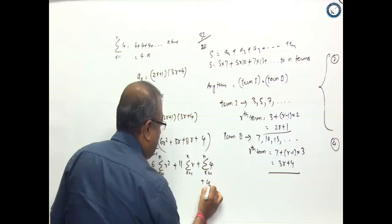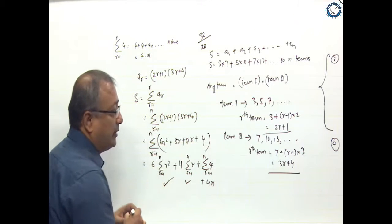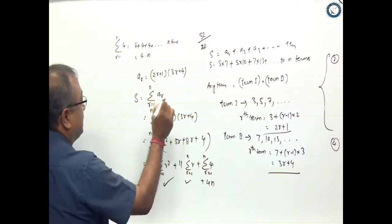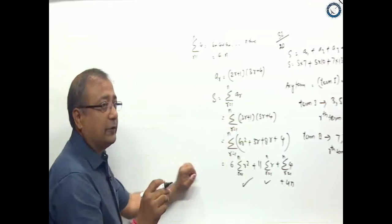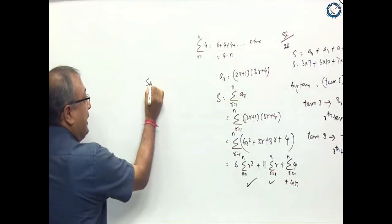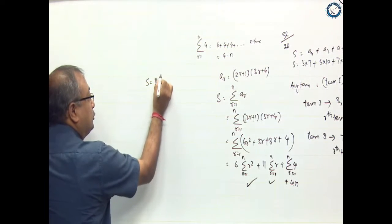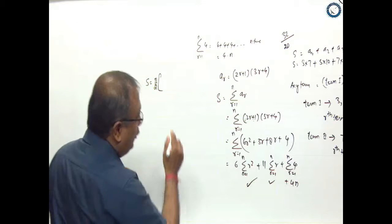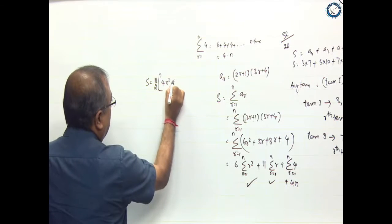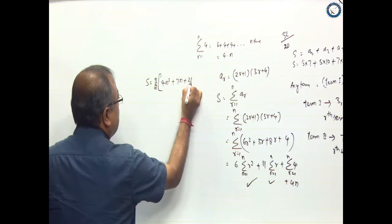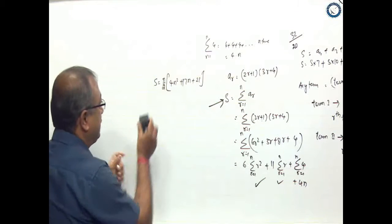So this will be 4 into n, and you can solve the answer. The answer will come out as - you have to solve on your own and tally this answer. S equals n/2 times (4n² + 7n + 21) initially.